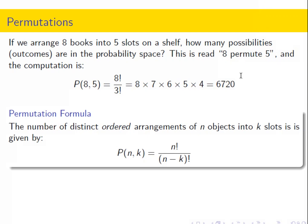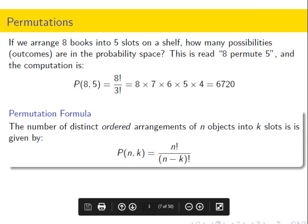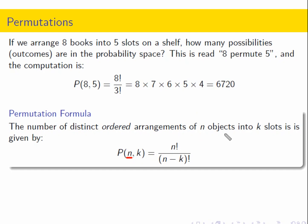Here's the formula: N permute K, where we have N objects and we're permuting them into K slots. K has to be less than or equal to N. We take N factorial in the numerator, and then N minus K factorial in the denominator. For eight permute five, that's eight minus five equals three, giving us N minus K factorial in the bottom.